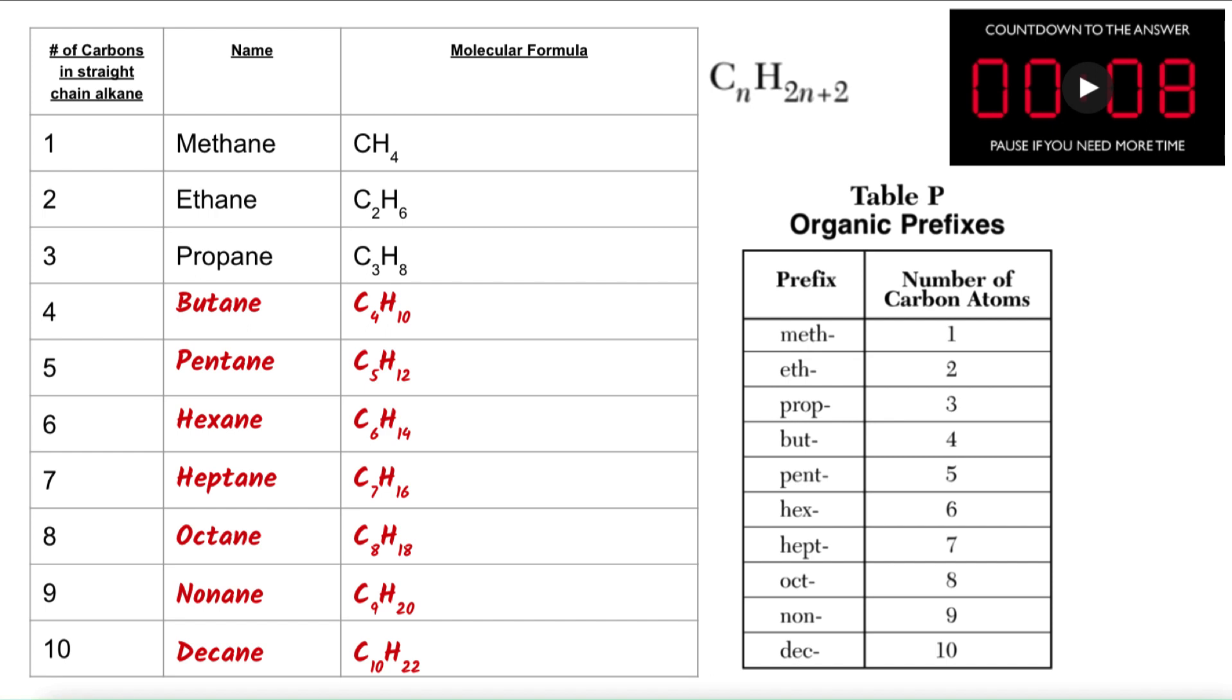Pentane would be my hydrocarbon with 5 carbons, hexane with 6, heptane with 7, octane with 8, nonane with 9, and decane with 10.